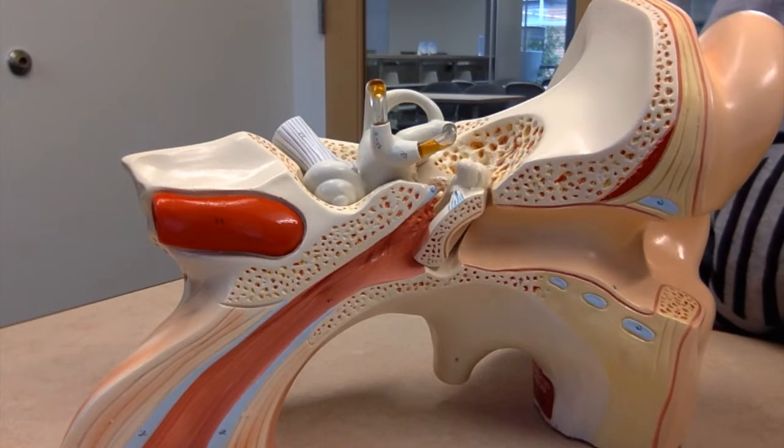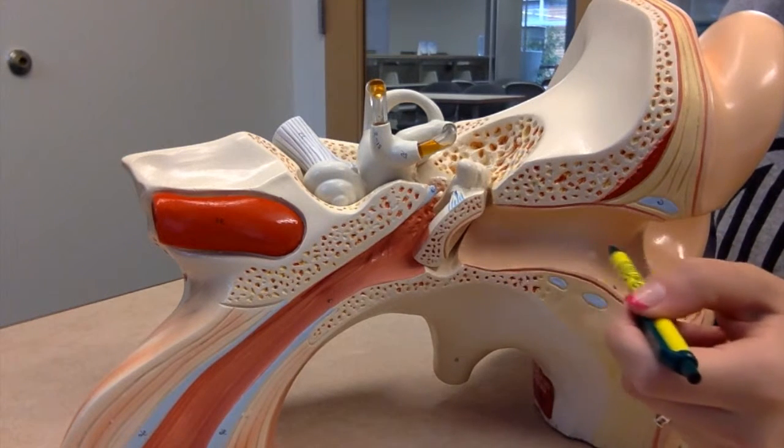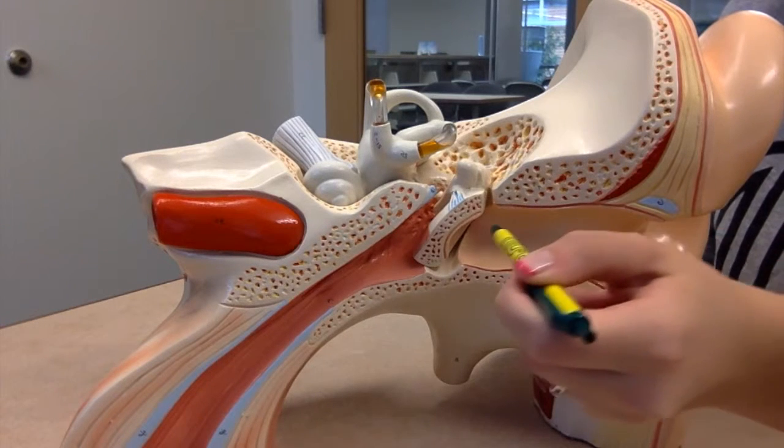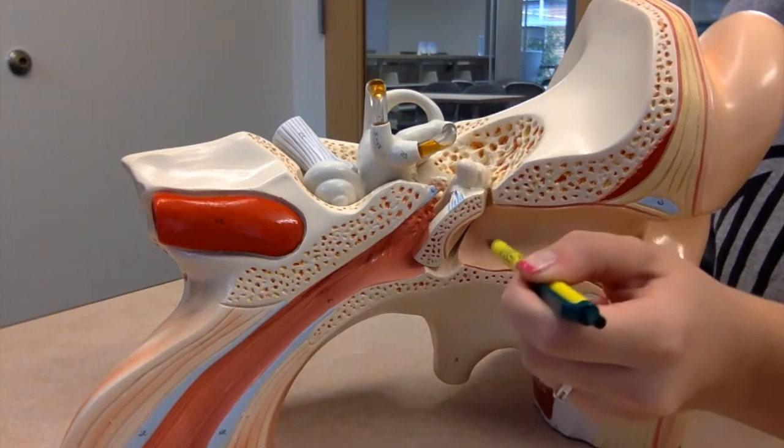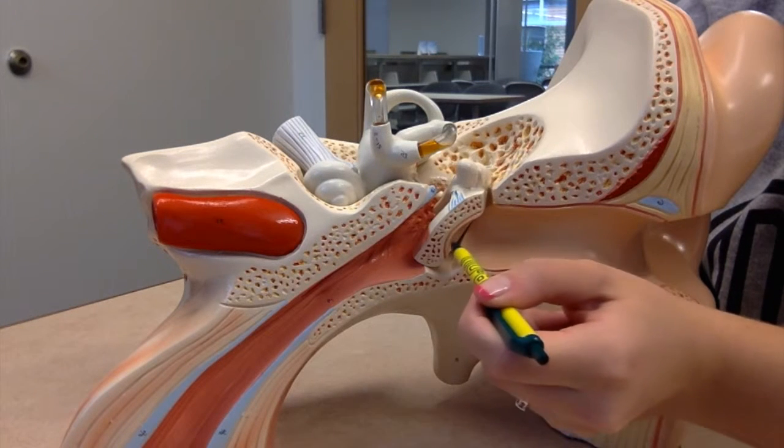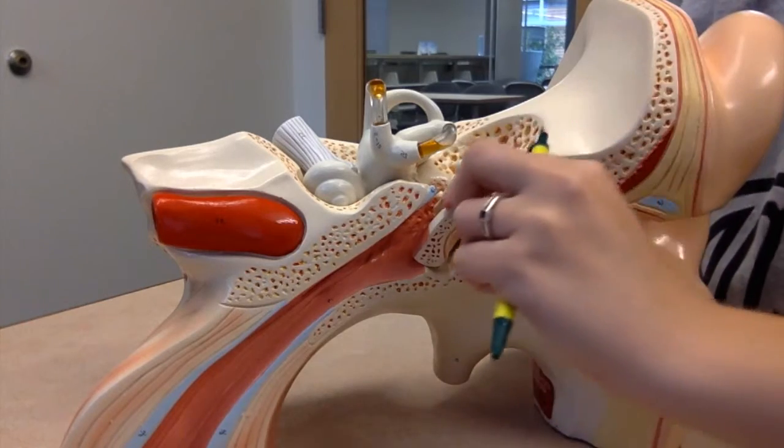When sound is captured by the auricle, the next step is it is funneled down the EAM, which consists of the cartilaginous portion, which makes up the lateral one-third, and the bony portion, which makes up the medial two-thirds. Once sound is filtered down the EAM, it hits the eardrum, otherwise known as the tympanic membrane. Let's take a look behind the tympanic membrane.